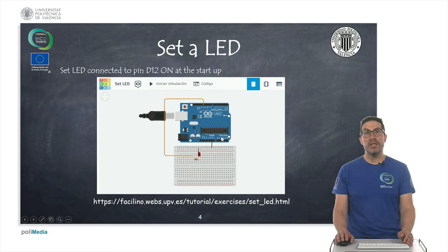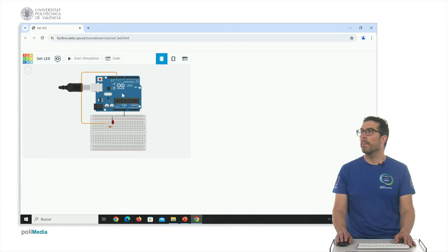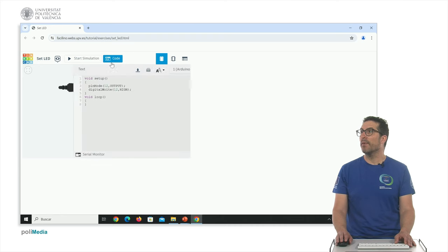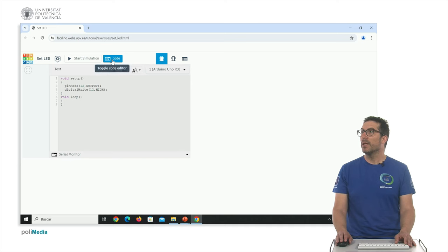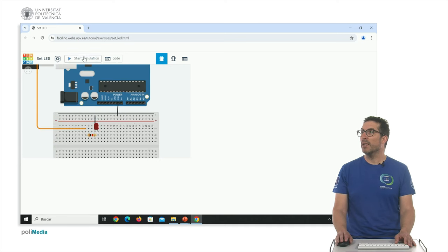Let me see a live demo using, in this case, Tinkercad simulator, how this code works. As you can see, we have uploaded exactly the same code here as before. And if we start the simulator, the LED which is connected to the Arduino to pin number 12 is set as ON.